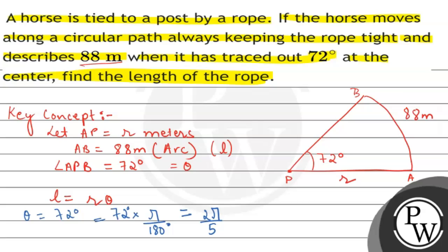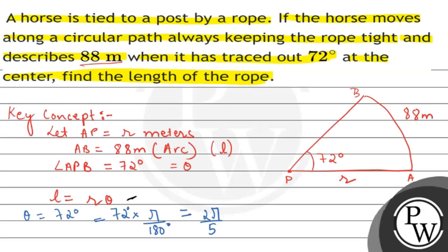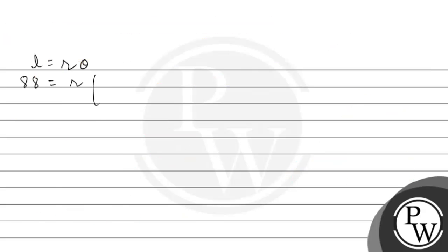Now what we have to do is put the values in l equals r theta. Our arc length is 88 meters. As we know l equals r theta, our length is 88, r is what we have to calculate, and theta is 2 pi by 5.